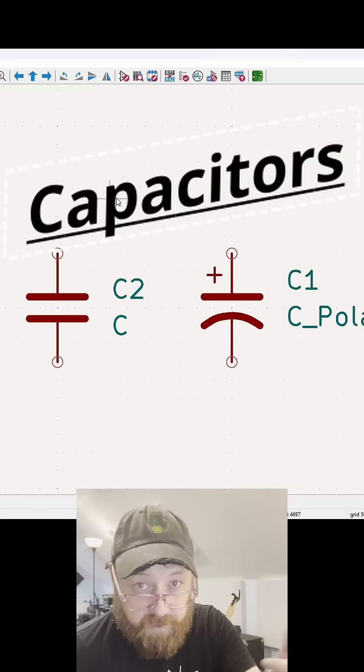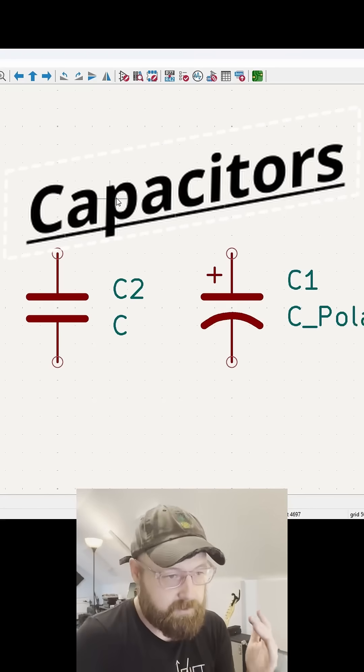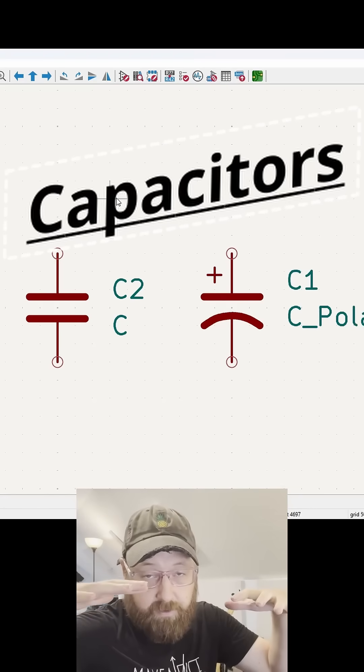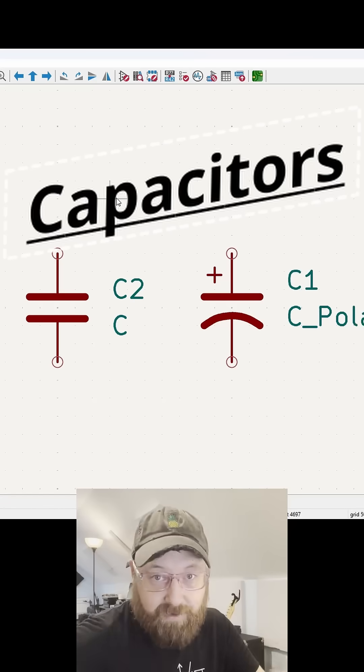That's usually because a capacitor has charged up. You switch the thing off and it's still holding on to that charge for a second. And as it drains, the light fades.